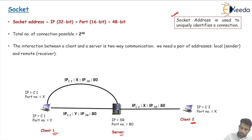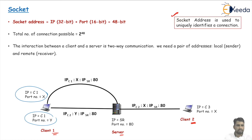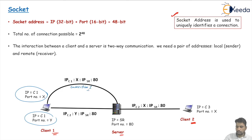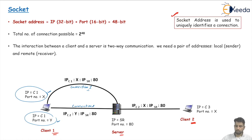In client one, we have two processes running. One process has port number X and the second process has port number Y. We need to define two different connections to the server to provide services for both processes. Connection one provides communication to process X, and connection two provides communication to process Y — two different connections for two different processes of the same client with the server.